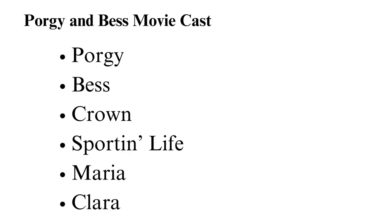Porgy and Bess movie cast. The entire character list in the story of Porgy and Bess differs from one form of art to another. Our focus here is the characters in the Porgy and Bess film of 1959. Porgy is a cripple who lives in Charleston, South Carolina. He is a strong-willed, compassionate, and kind black man who uses a goat-drawn cart to move around. Porgy falls in love with Bess and eventually kills Crown, Bess's abusive husband. Porgy greatly drives the plot as he offers Bess a safe haven and helps her deal with her addiction.